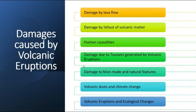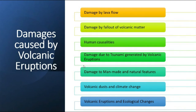Damage due to tsunami generated by volcanic eruptions: earthquakes caused before and after undersea volcanic eruptions generate destructive tsunami waves, causing innumerable deaths in affected coastal areas. Damage to man-made and natural features: fallout of volcanic material comprising lava, fragmented materials, ash, soot, and associated rainfall destroys human settlements and infrastructure such as buildings, transport, roads, airports, and communication systems, supply lines, water and oil pipelines, and electricity networks. It also creates problems for lakes, rivers, and natural vegetation.